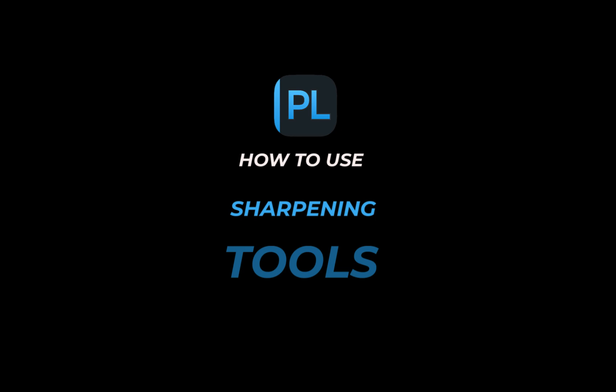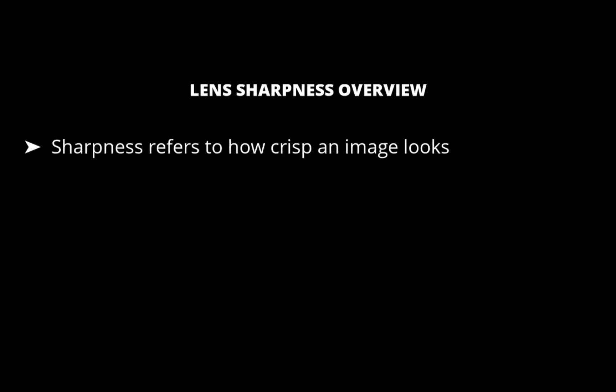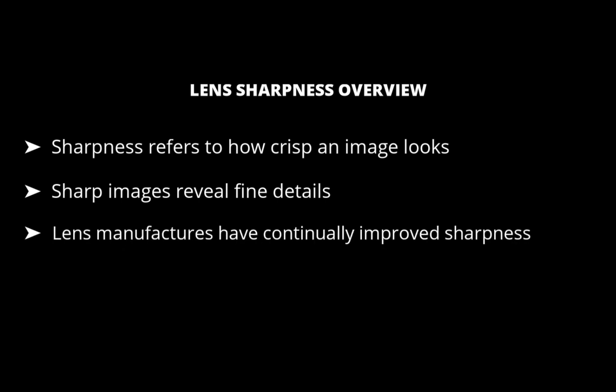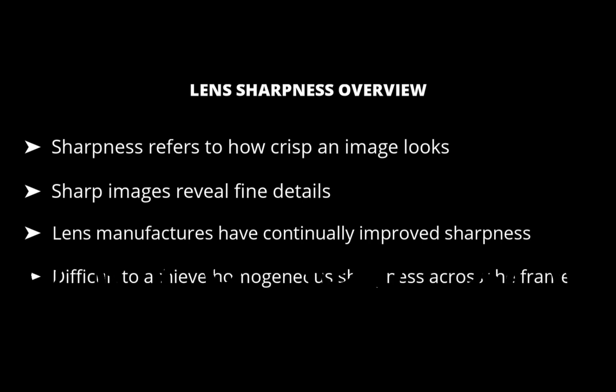Before we go into the demonstration, let's have a quick overview of lens sharpness. In photography, sharpness refers to how crisp an image appears. In a photo with sufficient sharpness, you will be able to see even the smallest details of the subject. Each new generation of lens improves the sharpness of the previous one. As a general rule, a manufacturer's lenses of today are sharper than a decade ago. DxO says that even for the most well-engineered lenses, the laws of physics make it very difficult to achieve homogeneous sharpness across the frame.